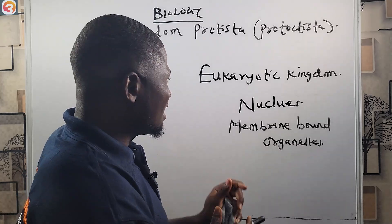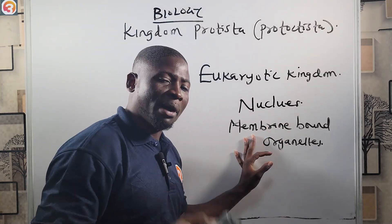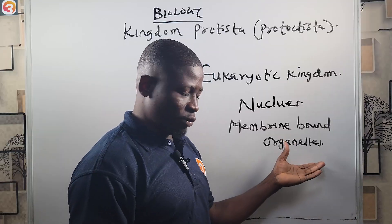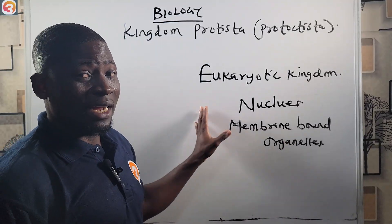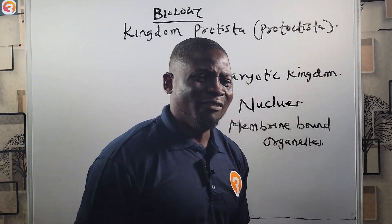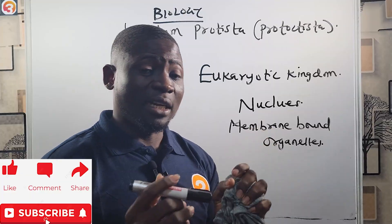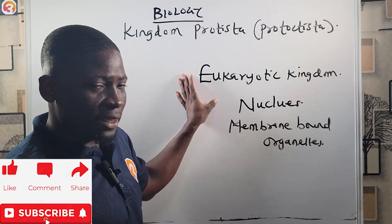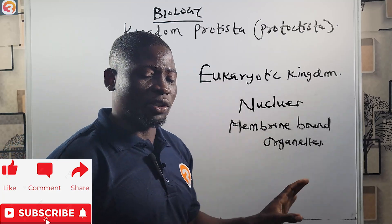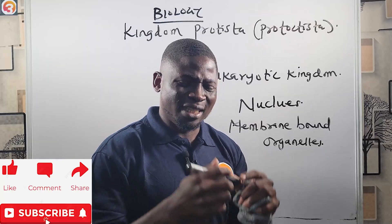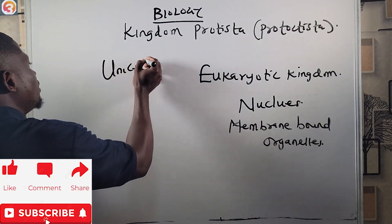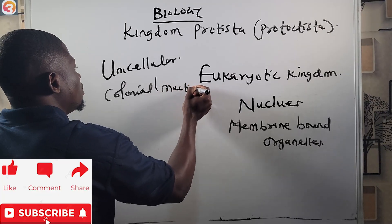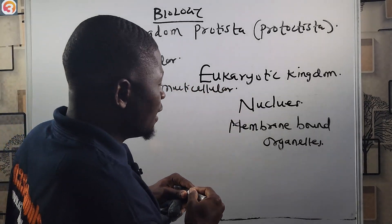Eukaryotes possess a nucleus and other membrane-bound organelles — the direct opposite of prokaryotes, which do not have a nucleus or membrane-bound organelles. Kingdom Protista is the most diverse of the eukaryotic kingdoms. They are mostly unicellular, but they can also be colonial or multicellular.